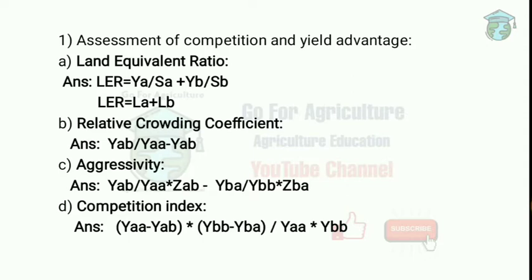Next, the Relative Crowding Coefficient equals YAB divided by (YAA minus YAB), where YAB means mixture yield — crop A grown with B — and YAA is the pure stand yield. The Relative Crowding Coefficient was proposed by de Wit and is used in replacement series of intercropping and for mixed populations.